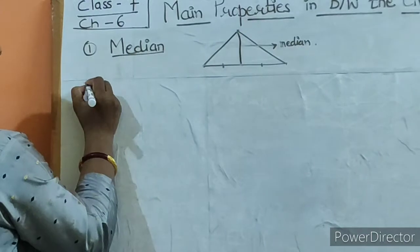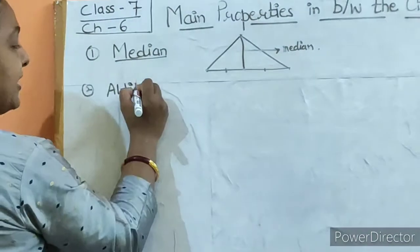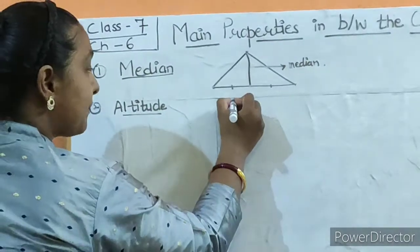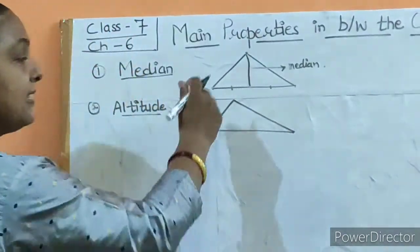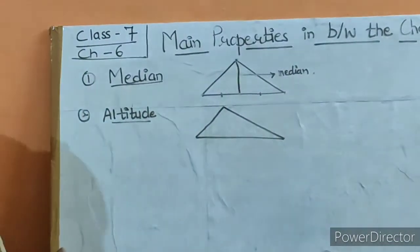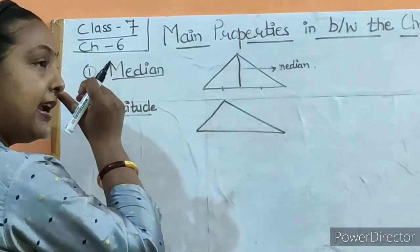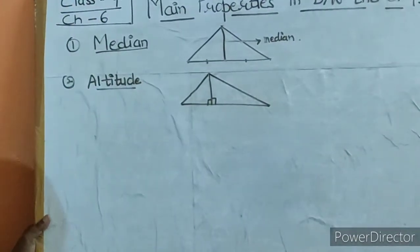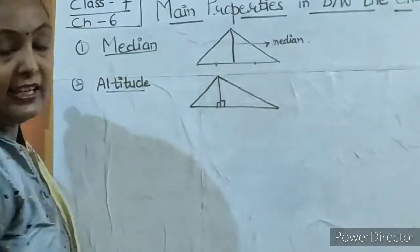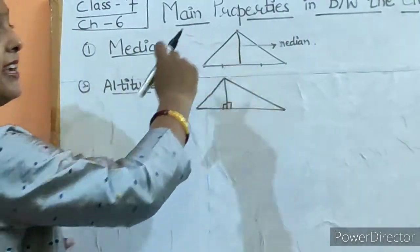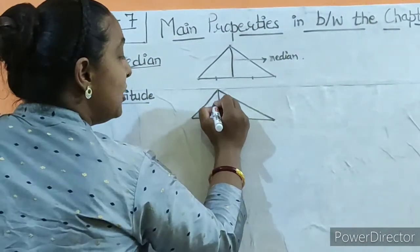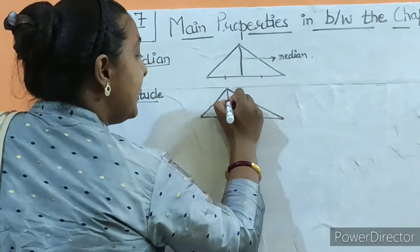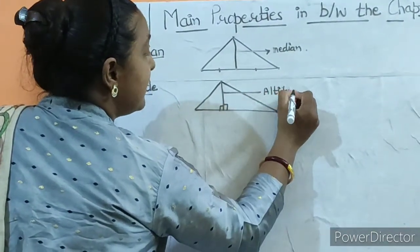Second property is altitude. Altitude is almost the same as the median, but there is a little difference. You draw from a vertex of the triangle. In a triangle, there are three medians and three altitudes. We show the altitude as a 90 degree angle. This line is called altitude. This is our second property.